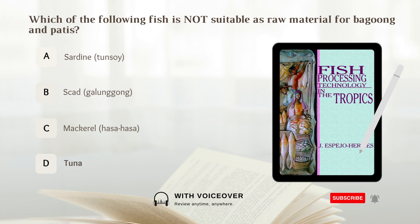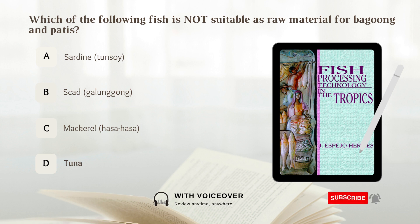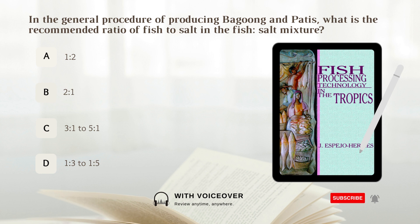D) Tuna. Fresh small fish such as sardine or tunsoy, scad or galonggong, mackerel or hasa-hasa, and anchovy or dillis are suitable as raw material. Small shrimps or alamang, oyster, and mussel meats can also be converted into bagoong.